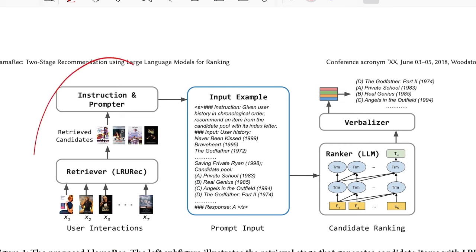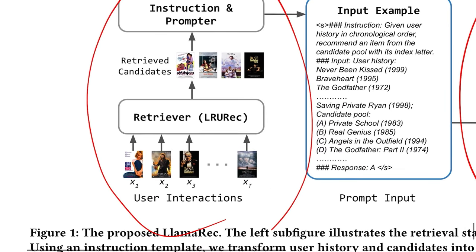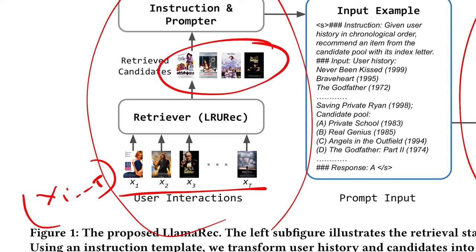On the left you see the retrieval phase, the middle segment we'll discuss in a moment, and the right is the ranking phase. We start with user interactions — X_i is the movie the user has seen — and let's say you have T such movies, X1 to XT. This goes to your retrieval system that generates candidates for what you should see next. They use LRU-REC for getting these retrieved candidates, which is really fast because the framework is designed to do recursive parallelization.